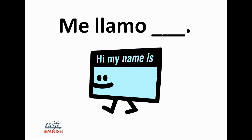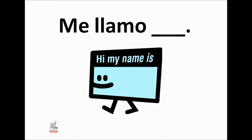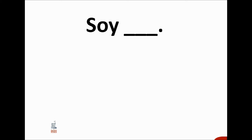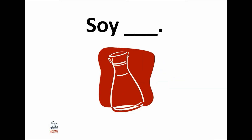When someone asks you ¿Cómo se llama?, you say 'me llamo' and then your name. It means 'my name is' or 'I'm called.' Another thing you can say is 'soy,' which means 'I am' — soy and then your name. Just like soy sauce. Soy.